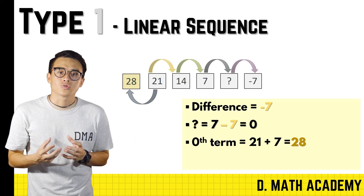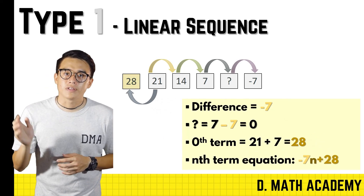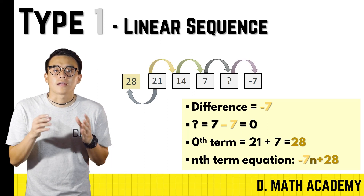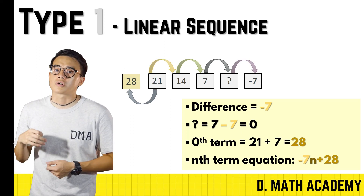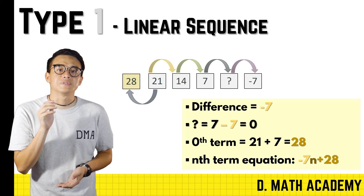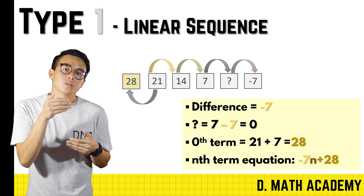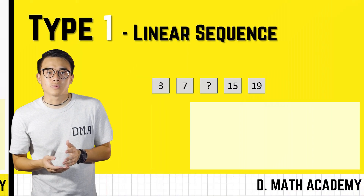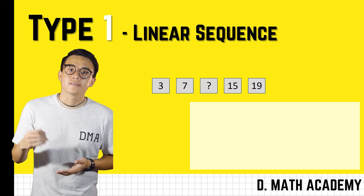Combine the two variables to construct the n-term. In our case the n-term equation is negative seven n plus 28. You can always check by substituting values — taking the first term: negative seven times one plus 28 equals 21, which matches the question. This confirms the n-term equation is correct.